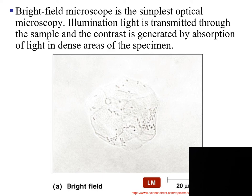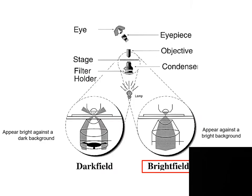The bright field microscope is the simplest optical microscopy we have. Illumination light is transmitted through the sample, and contrast is generated by absorption of light in dense areas of the specimen. In the bright field path, the specimen appears against a bright background.